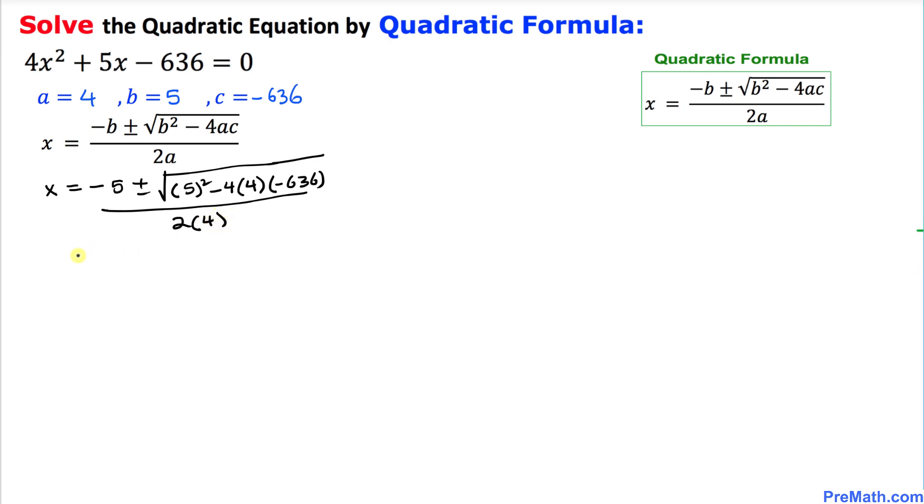Let's simplify further. We are going to have negative 5 plus or minus the square root of 25, and when we multiply 4 times 4 times negative 636, that is going to give us positive 10176 divided by 2 times 4, which is 8.